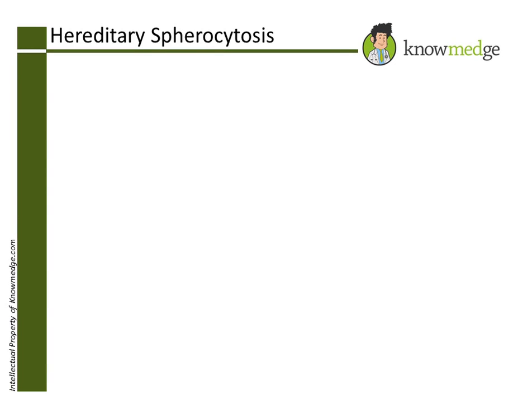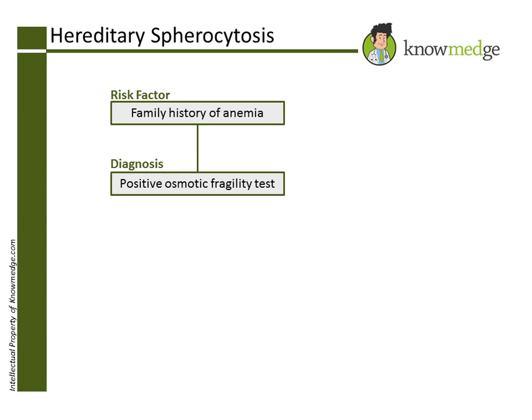This patient likely has hereditary spherocytosis. The clue to this condition is a family history of anemia and a positive osmotic fragility test. The reduced surface-to-volume ratio makes the spherocytes more susceptible to osmotic stress.